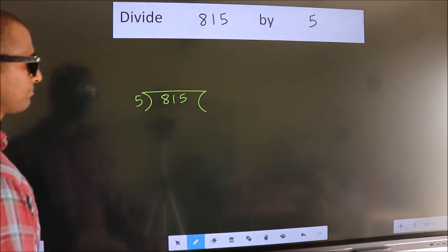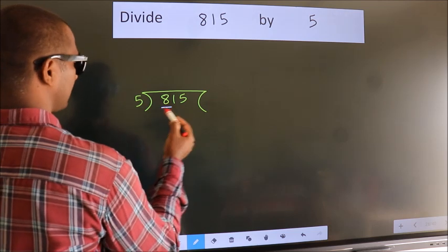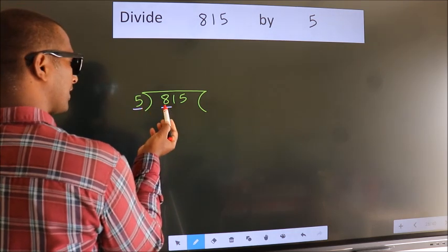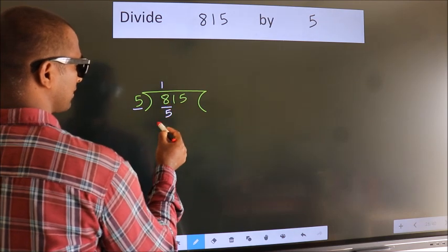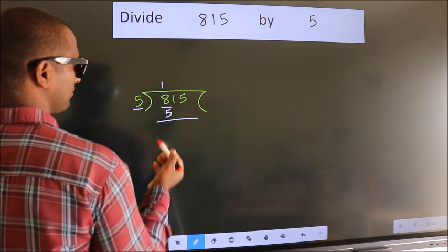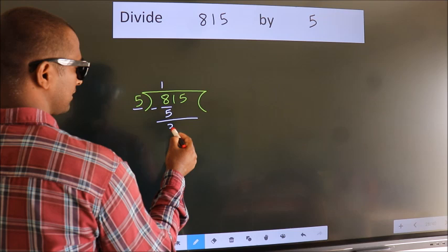Next. Here we have 8, here 5. A number close to 8 in 5 table is 5 times 1 is 5. Now we should subtract. We get 3.